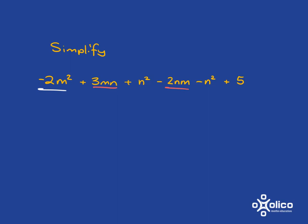Then we have n squared. Are there any other n squareds? Yes, over here. And the last term is a 5, a number on its own. There are no other numbers on their own, so that one's not going to have a partner.